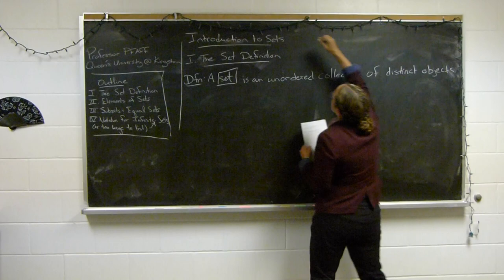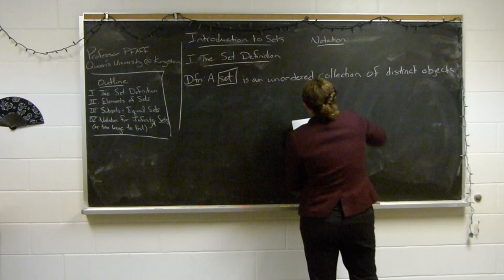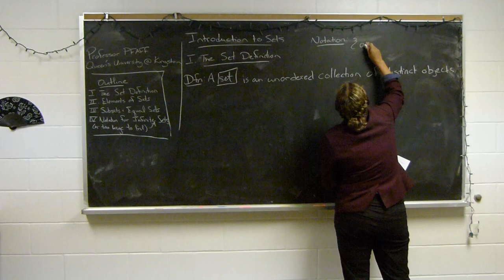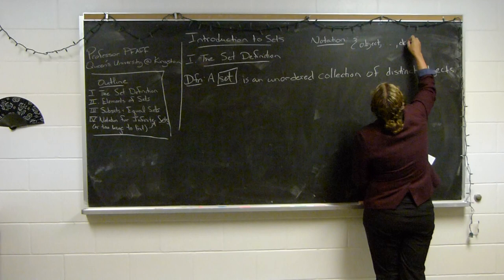Here's the notation: a set looks like curly brackets containing a list — object, object, and so on. You list all of your objects just like that.